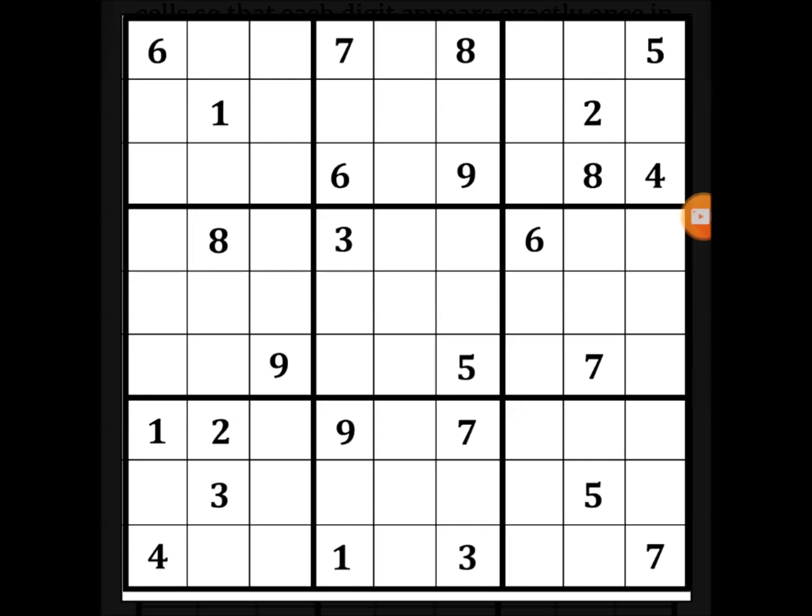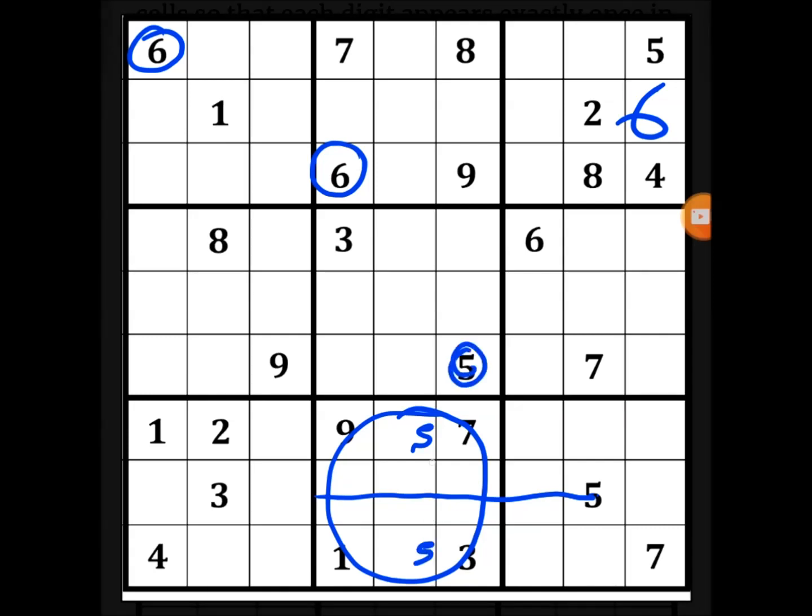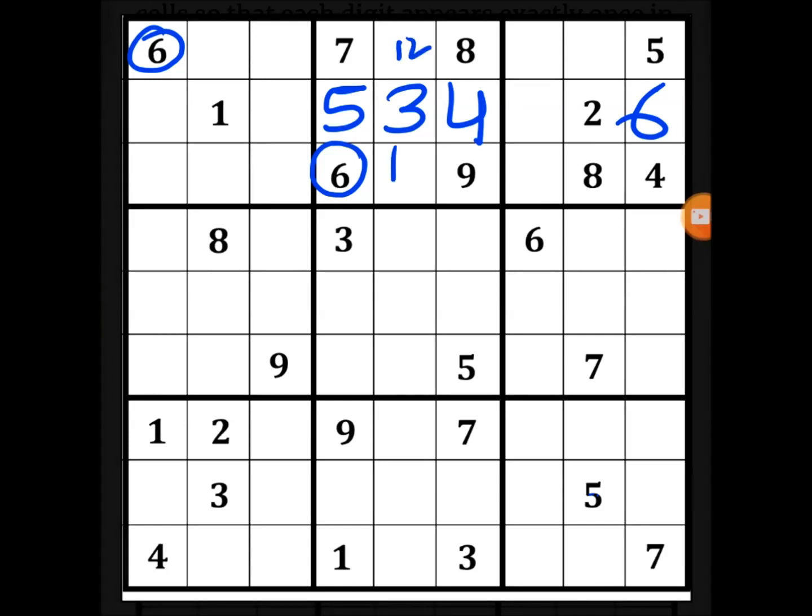Let's get started with this. 6 is here, 6 is here, so 6 should go here. Now 5 is here, so for this box 5 can only come here or here, that means here. 1, 5 is there and because of this 5 will go here, 3 will go here, 4 will go here and this will be 1-2, 1-2, this will be 2-6, this will be 1-2.